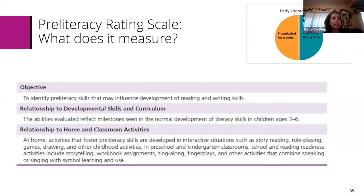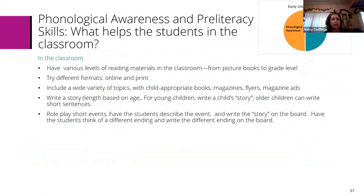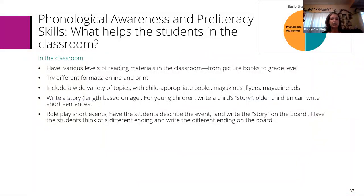The pre-literacy rating scale is intended to identify pre-literacy skills that may influence the development of reading and writing skills. It's not a fully comprehensive measure, but it provides enough information to use at a team meeting in conjunction with the classroom teacher and any other special services the child is receiving. It is divided into two sections — early reading skills and early writing skills — and the handout provides guidance on what to consider suggesting to help the child improve in these areas.